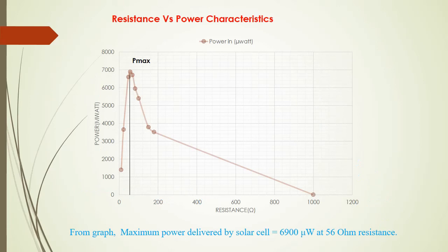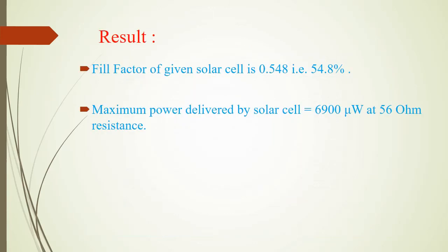This is the graph between power versus resistance — resistance on the x-axis and power on the y-axis. From this, we can determine the maximum power delivered by the solar cell, which is approximately 6900 microwatts and is produced at 56 ohms resistance. Thus, the fill factor of the given solar cell is 54.8% and the maximum power delivered by the cell is 6900 microwatts at 56 ohms resistance. Thank you.